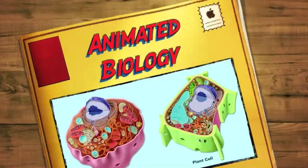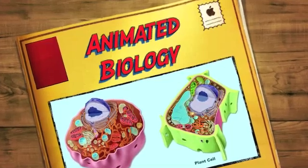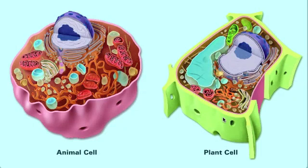Eukaryotic cells have highly organized structures, including membrane-bound organelles. Plants and animals share many of the same types of organelles, but both have organelles that are unique to their needs. Let's go ahead and learn about animal cells first.